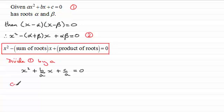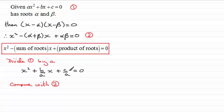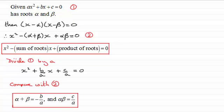Comparing this to equation (2), we notice that −(α + β) must be equivalent to b/a, and the product of the roots αβ must be c/a. So in summary: the sum of the roots α + β = −b/a, and the product of the roots αβ = c/a.